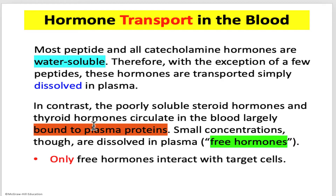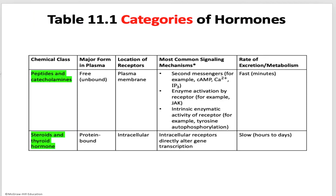Regardless, only the free hormone — devoid of its protein carrier — is able to interact with target cells. Table 11.1 does a fantastic job of taking information from previous cell biology chapters and consolidating it here in association with hormone types. Looking at the third column, the location of the receptors: polar hormones have receptors in the plasma membrane, while non-polar hormones have intracellular receptors. These then continue the message through signal transduction using a whole host of signaling pathways.